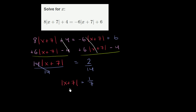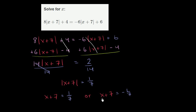But we really need to solve for x. So how can we reason through this? If I take the absolute value of something and I get 1 seventh, there are two possible things that I took the absolute value of. I could have taken the absolute value of positive 1 seventh, or I could have taken the absolute value of negative 1 seventh. So x plus 7 could be equal to positive 1 seventh, or x plus 7 could be equal to negative 1 seventh.